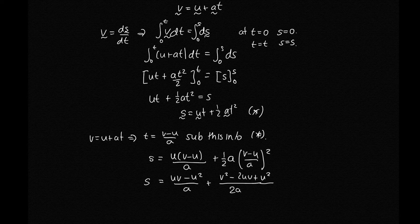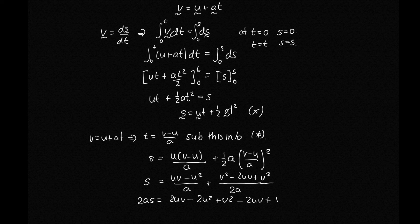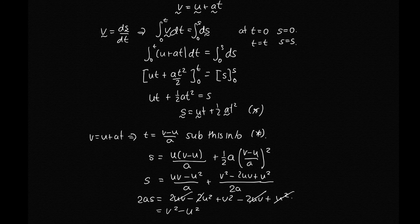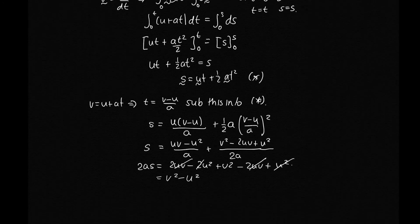Multiplying both sides by 2a: 2as = 2uv − 2u² + v² − 2uv + u². The 2uv terms cancel, and −2u² + u² gives −u², so we have 2as = v² − u², which gives us our final kinematic equation: v² = u² + 2as.